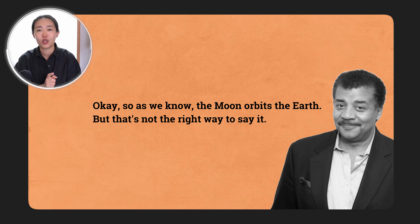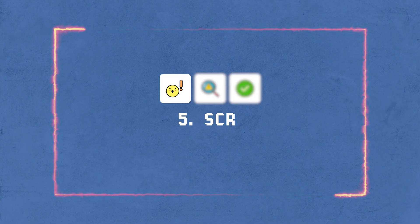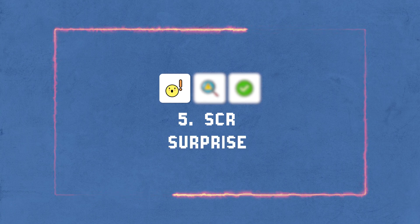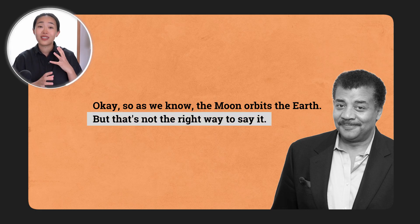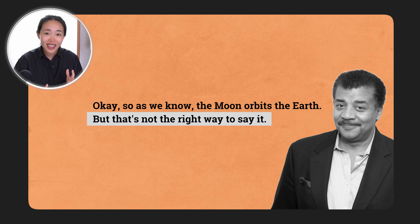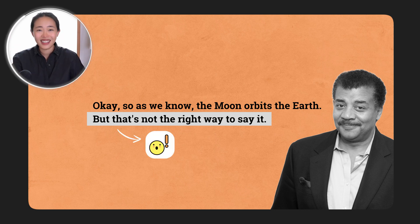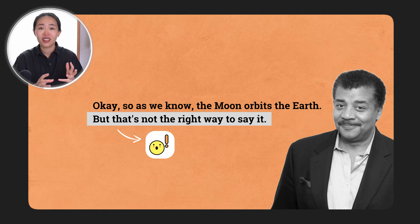This leads to the next framework: a three-part framework, and he starts with part one, which is surprise. He says "the moon orbits the earth, but that's not the right way of saying it." All of a sudden you're like — what? I know that to be true. How can it not be the right way of saying it? What am I missing? So you're capturing the attention of the audience with this framework, priming them to take in the new information you're about to give them.